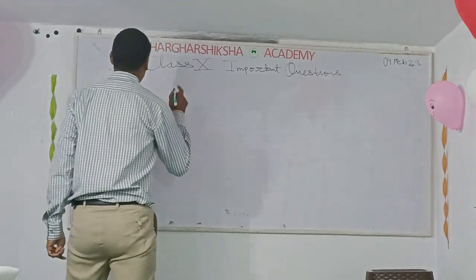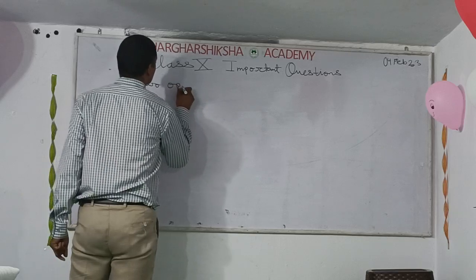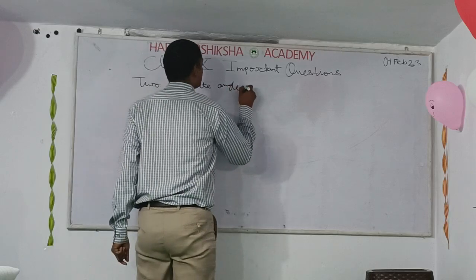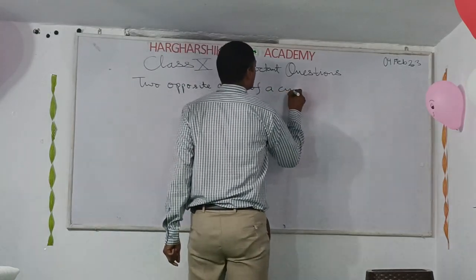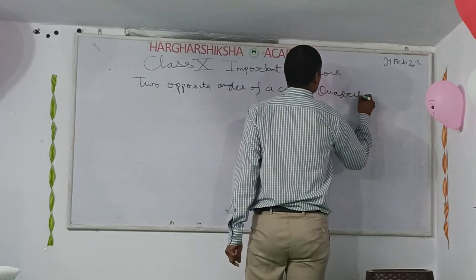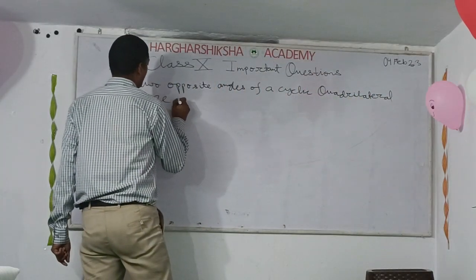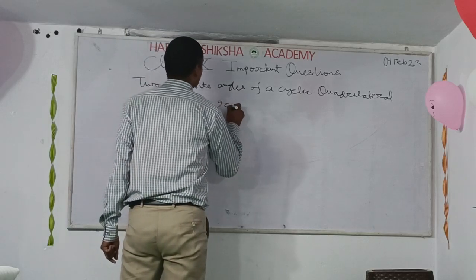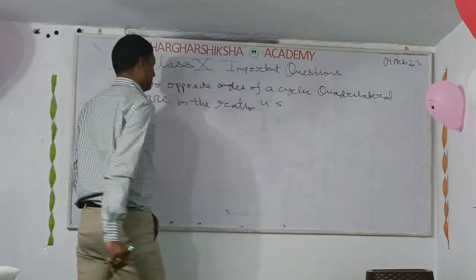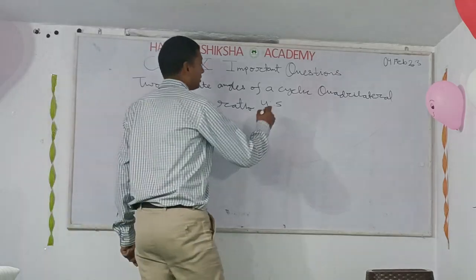If you don't know what a Cyclic Quadrilateral is, I will give you a question. Two opposite angles of a Cyclic Quadrilateral are in the ratio 4 is to 5. Find the angles.